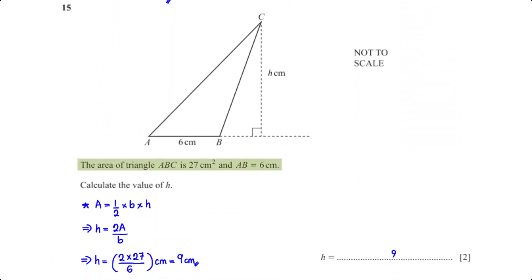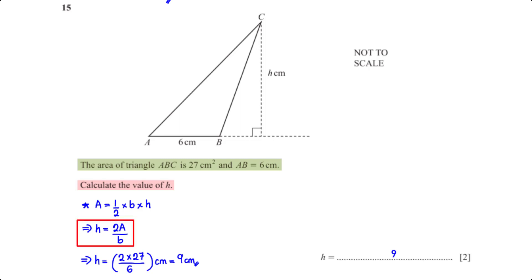The area of triangle ABC is 27 cm² and AB is 6 cm. Calculate the value of h. Using the area formula and making h the subject, with area 27 cm² and base 6 cm, this gives us h equals 9 centimetres.